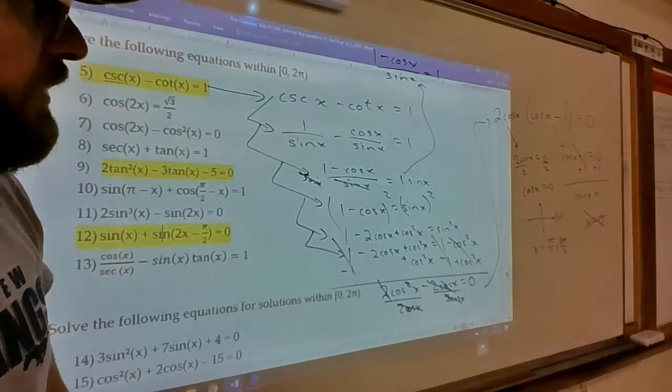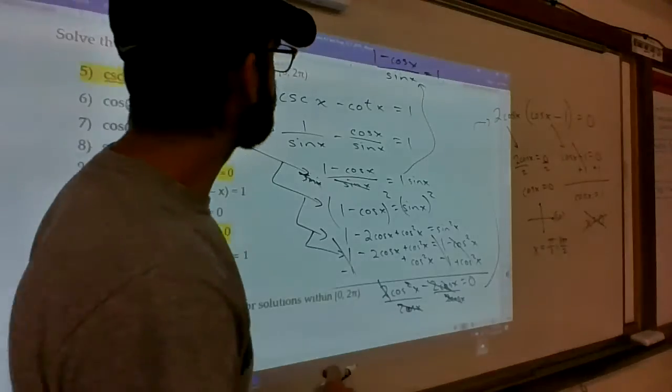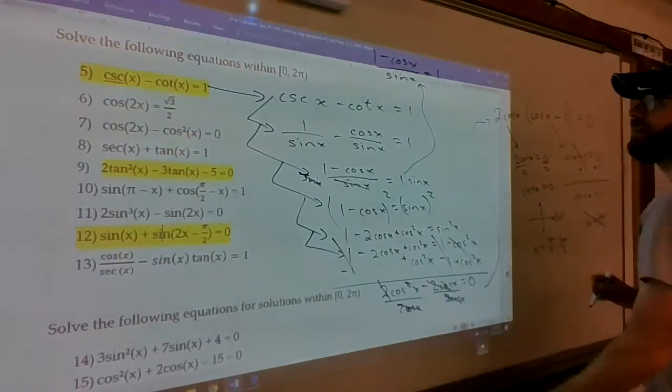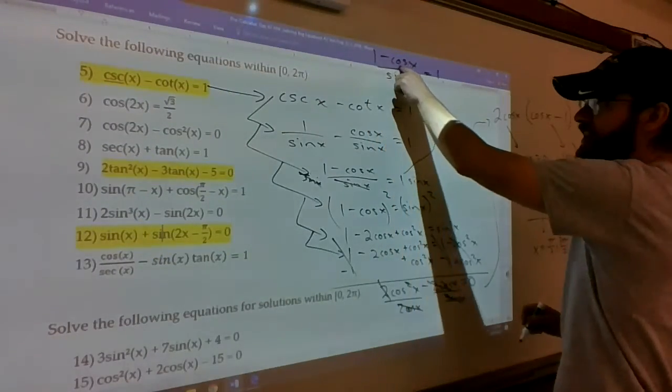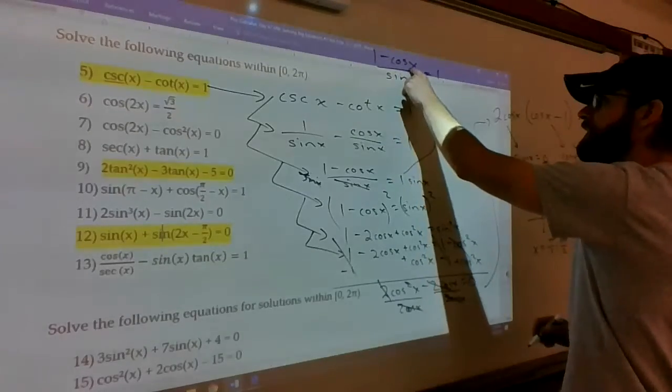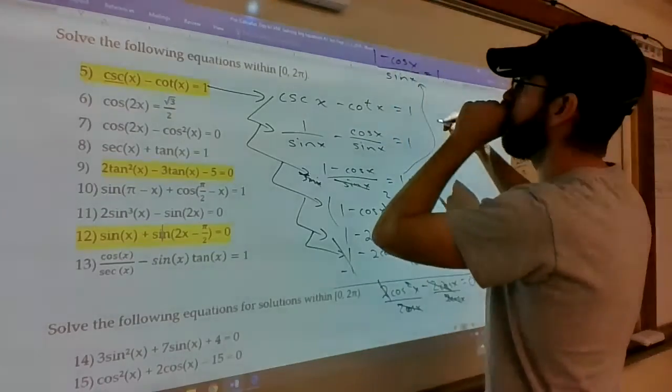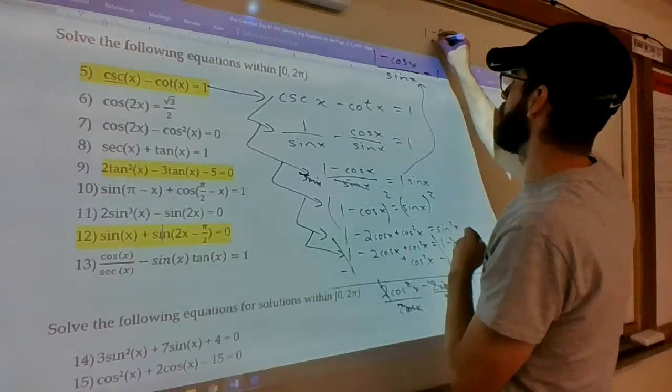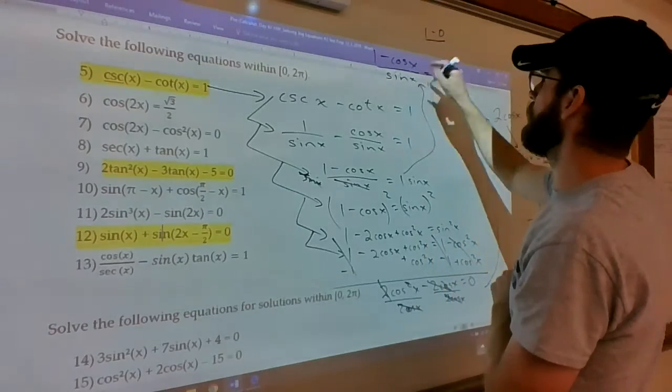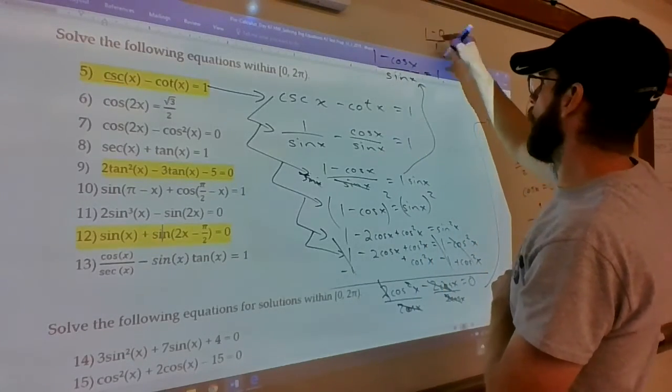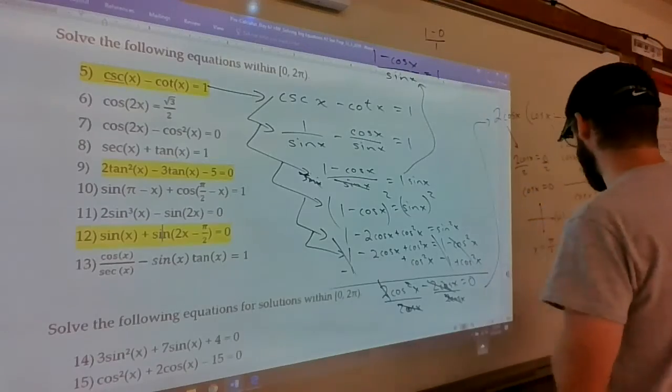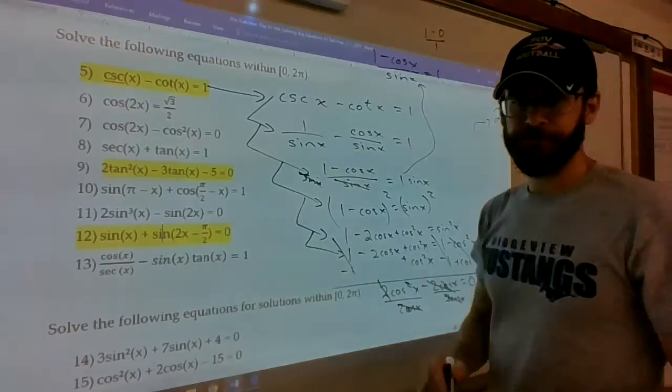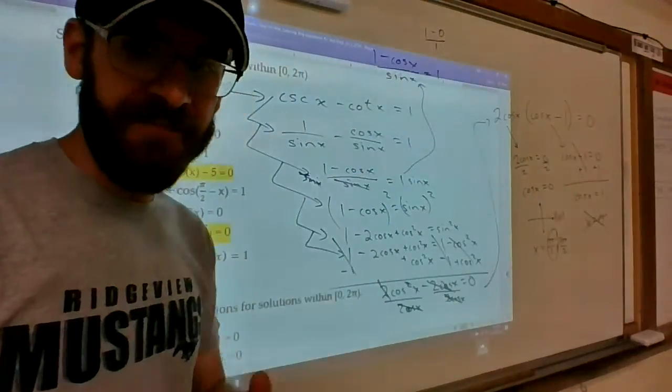If we check π/2, so 1 minus the cosine of π/2. That would be 1 - 0. Divided by sine of π/2, that'd be 1. That'd be 1/1. That checks out. So, π/2 is definitely a solution.